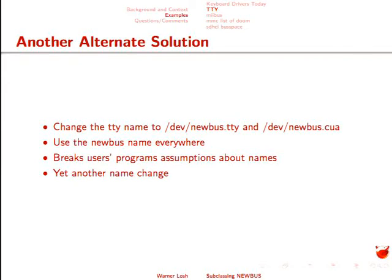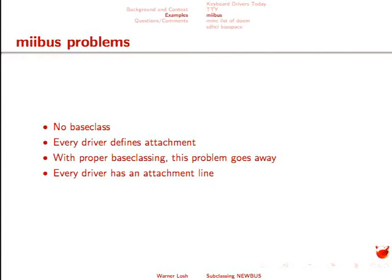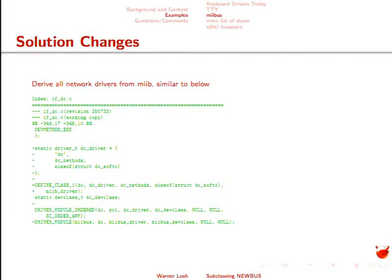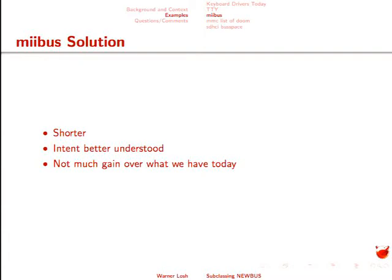MII bus has a lot of attachments in the tree — your driver adds a new attachment, so there's no centralized list to know where things are. If we did a MII base class we could make things simpler, going through the same sort of stuff as before. But I'm not sure it would buy us much — it would be one way we could use Newbus subclassing in the tree that would not be invasive, but like I said, I don't think it would buy us a whole lot over what's there.